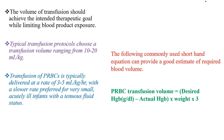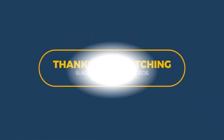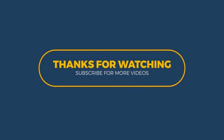The following commonly used shorthand equation can provide a good estimate of required blood volume: the volume of packed RBCs to be transfused equals the desired hemoglobin minus the actual hemoglobin in g/dL, times the weight of the baby in kg, times 3. By this way we can calculate the amount of packed RBCs required for the newborn to achieve our desired hemoglobin. This is all about neonatal anemia. Thanks for watching and subscribe for more videos.